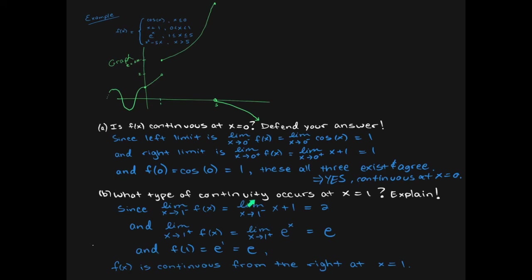For part b, what type of continuity is happening at x equals one? From the left, the height approaches two. From the right, the height approaches e. At x equals one, f of one equals e to the one, which is e. The right limit agrees with f of one, but the left limit does not. So it is continuous from the right, but not continuous from the left at x equals one.